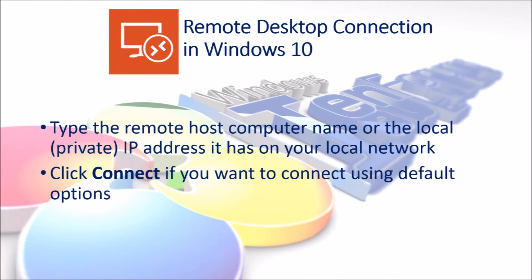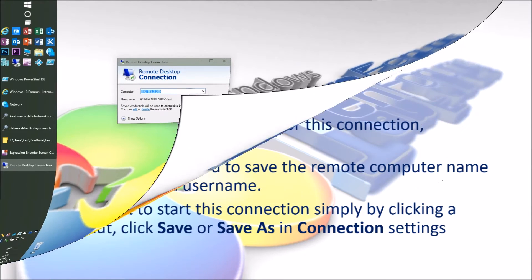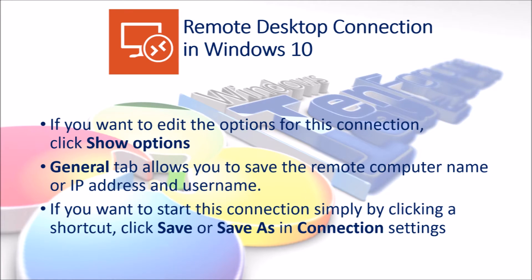Type the remote host computer name or the local private IP address. Click Connect if you want to connect using default options. If you want to edit the options for this connection, click Show Options.